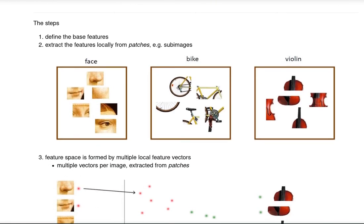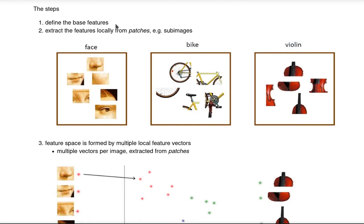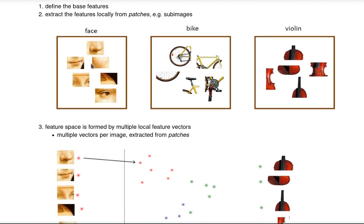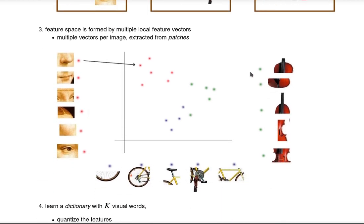How can we apply that in general, not only for texture? The steps are: first define the base features, then extract features locally from patches. I'm using three examples of a face, a bike, and a violin. The feature space will be formed by multiple local feature vectors. Instead of having a single vector representing the whole image, we have lots of vectors representing each image extracted from patches. The red dots represent face, blue ones bike, and green ones violin.